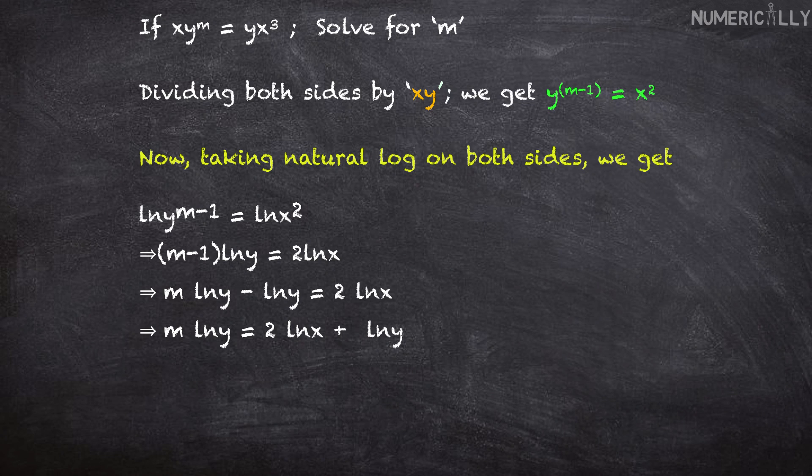Which implies m ln y equals 2 ln x plus ln y. If we make m the subject, we get m equals 2 ln x plus ln y over ln y, which implies m equals 2 ln x over ln y plus 1.